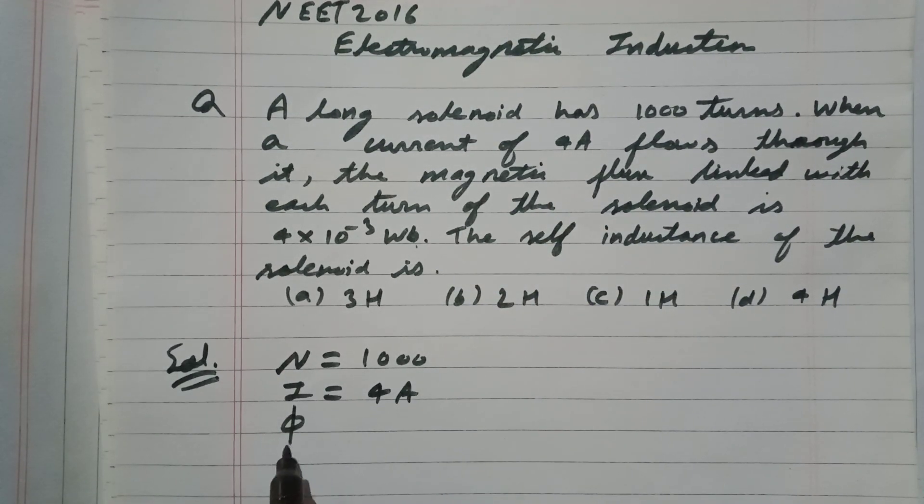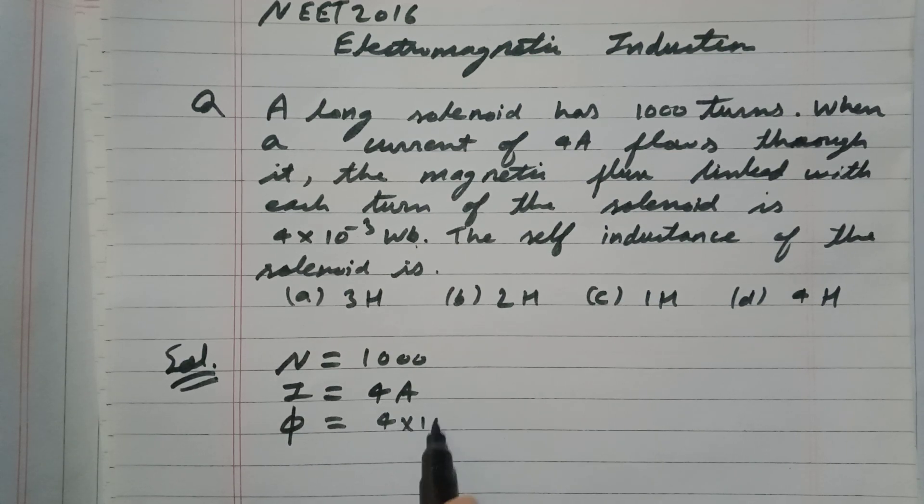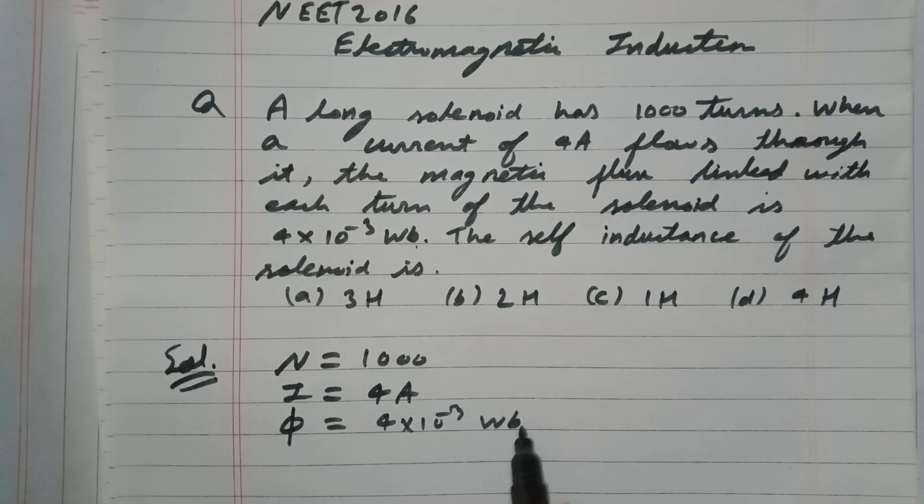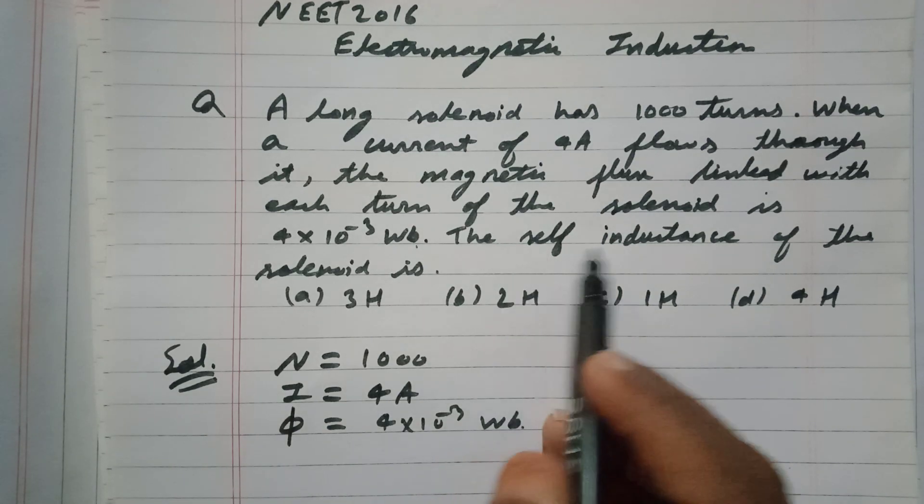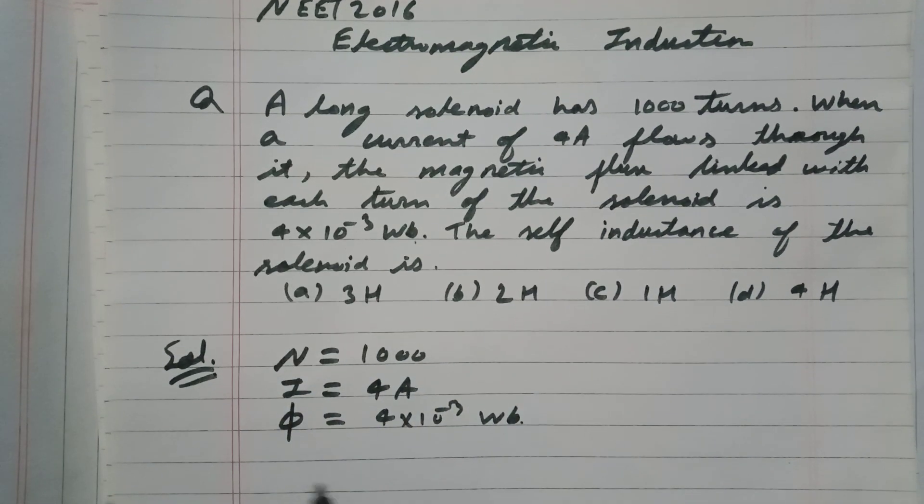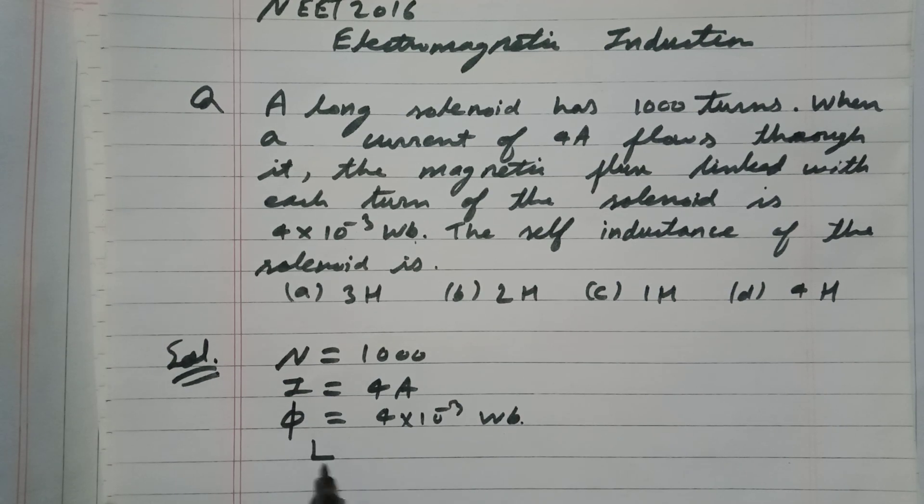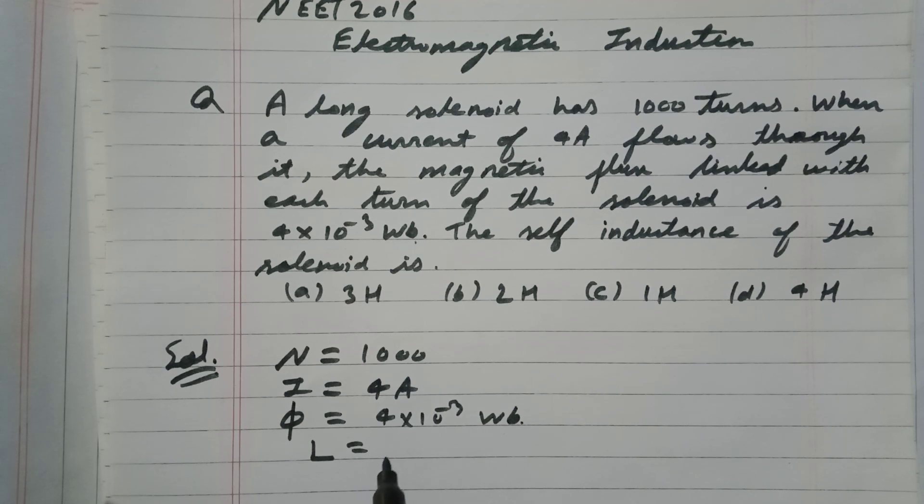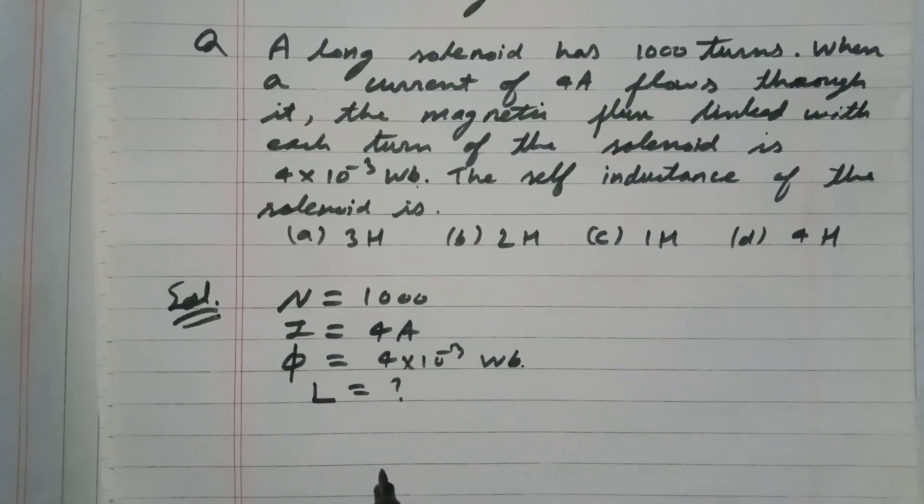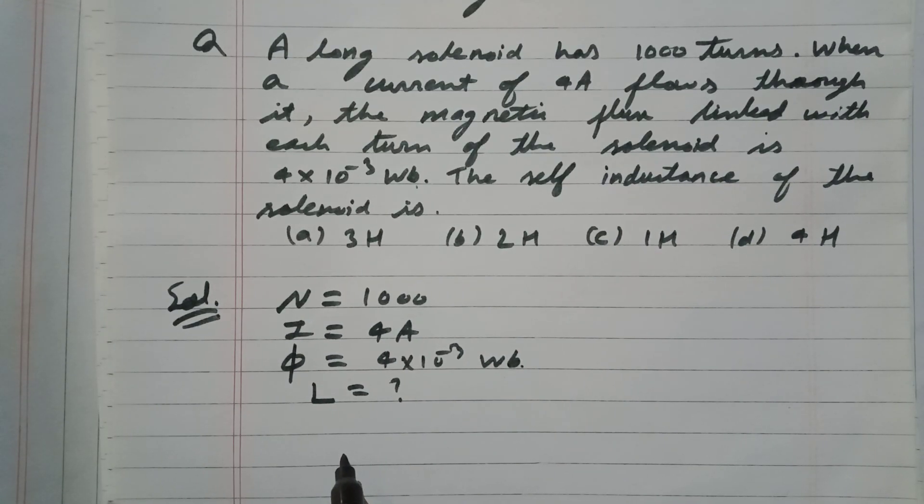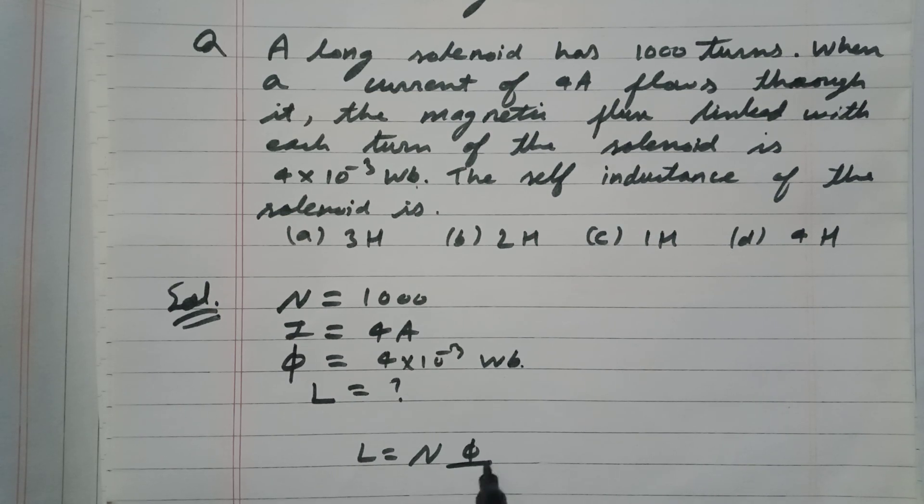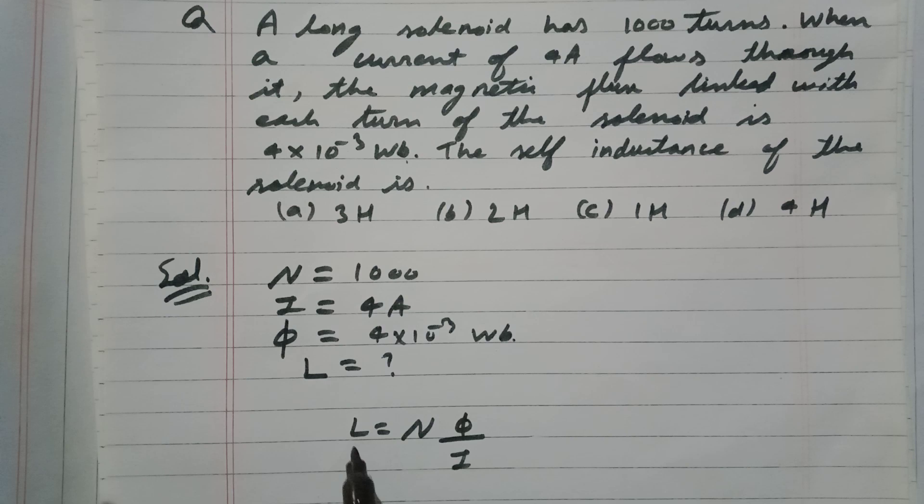The self inductance of the solenoid is... so I am writing self inductance as L = Nφ/I. What is L? L is self inductance. What is N? N is the number of turns. What is φ? φ is the magnetic flux linked with the coil.